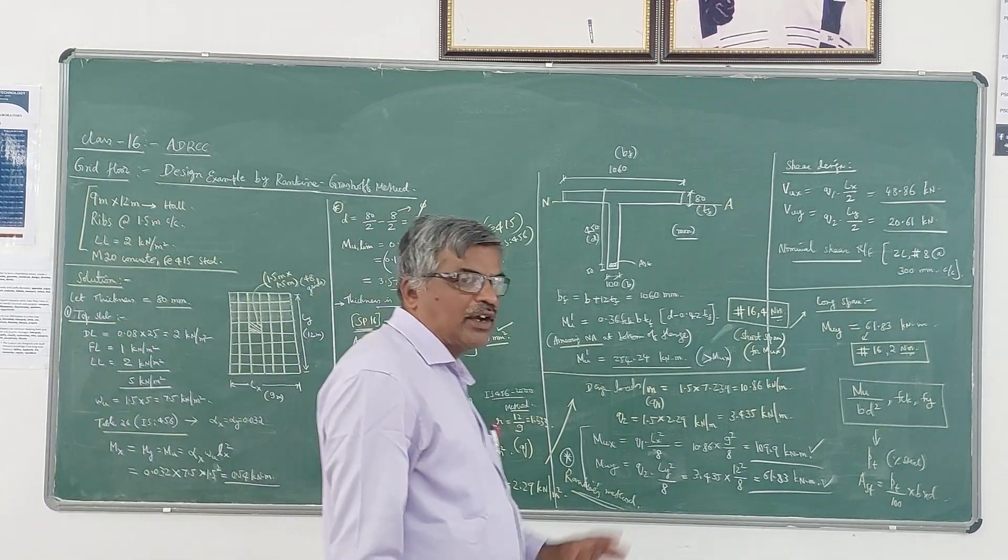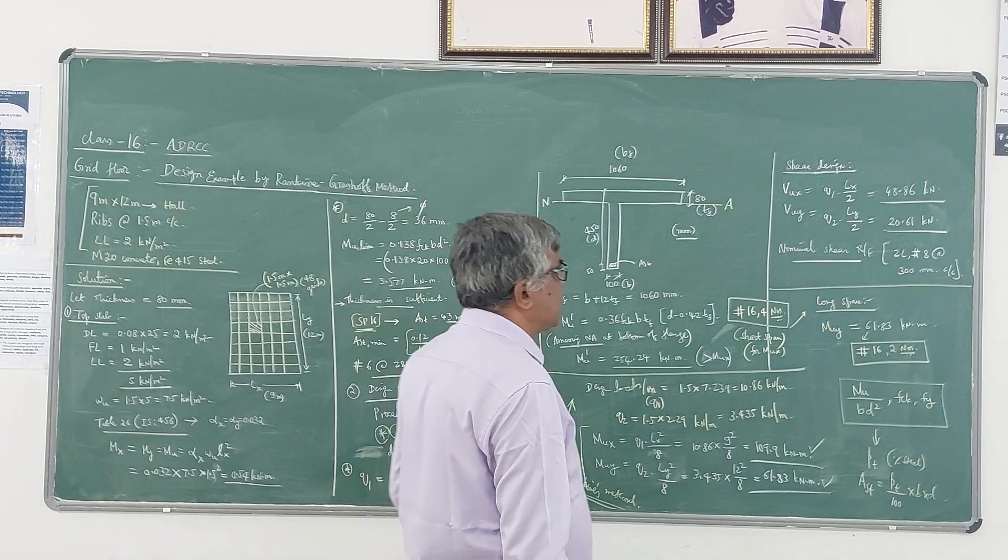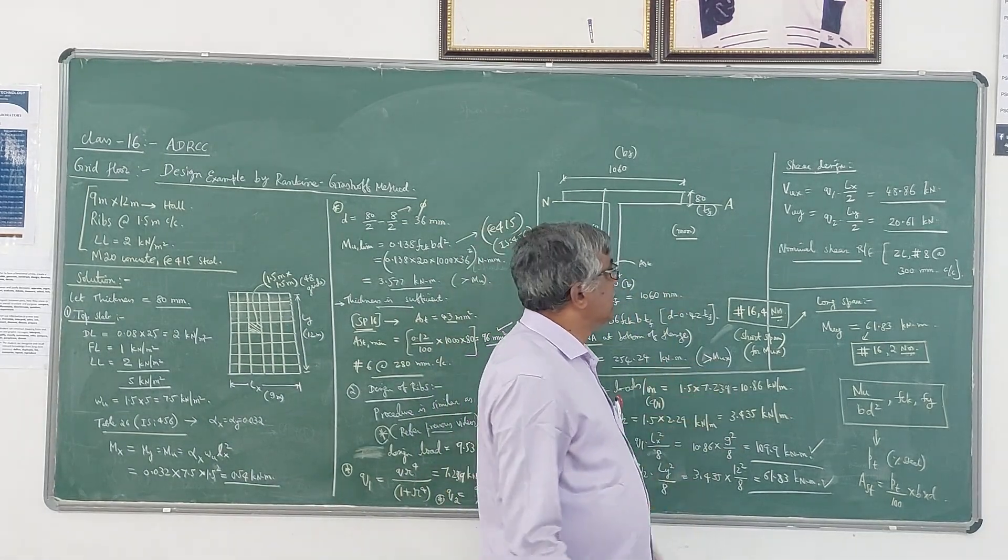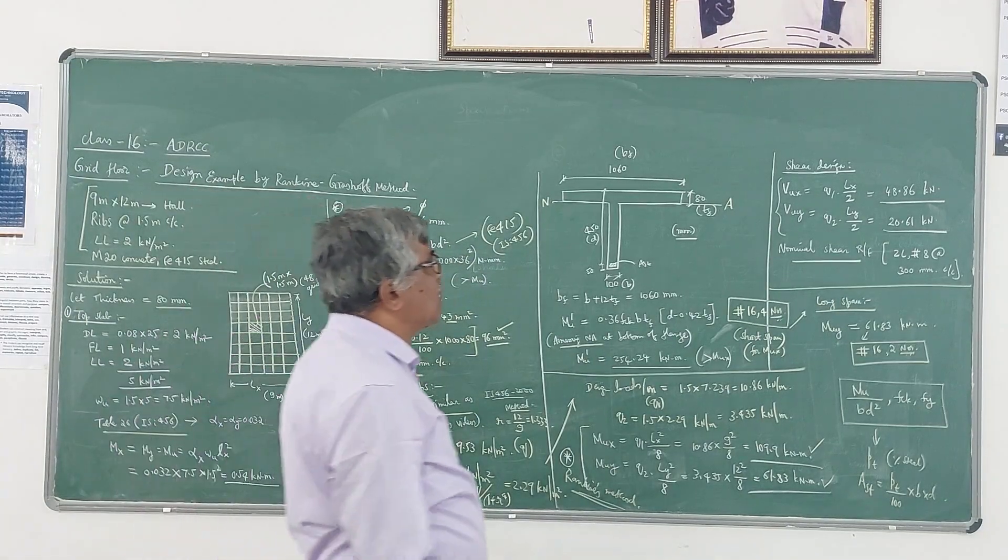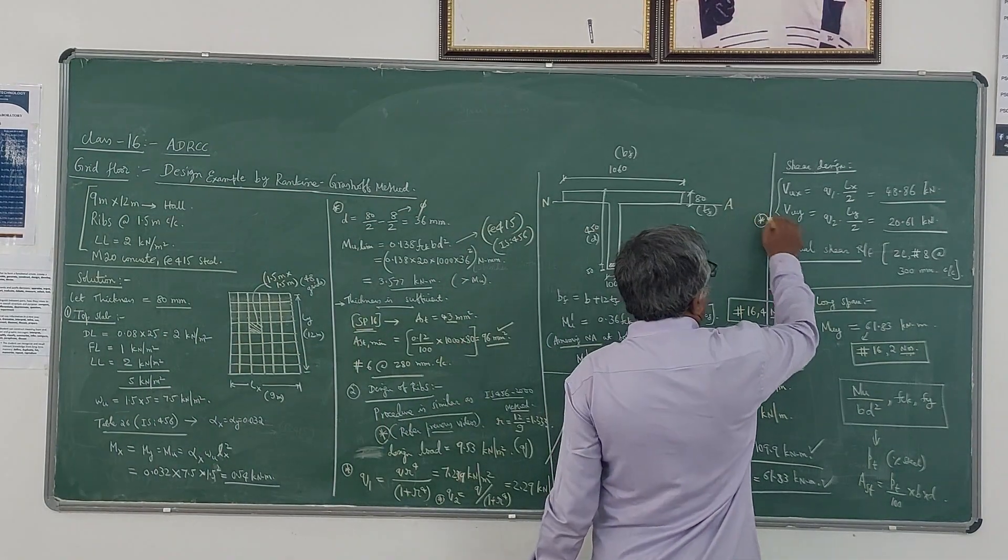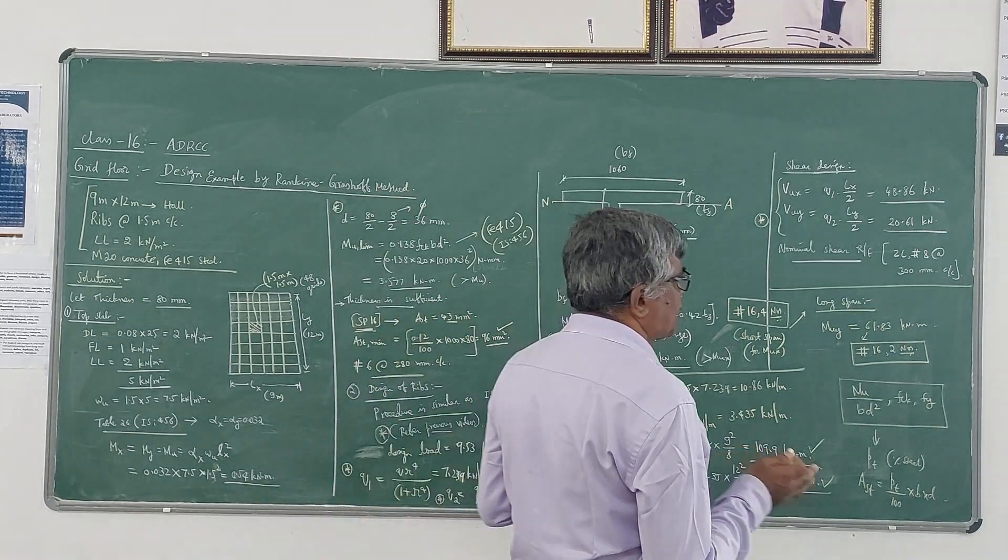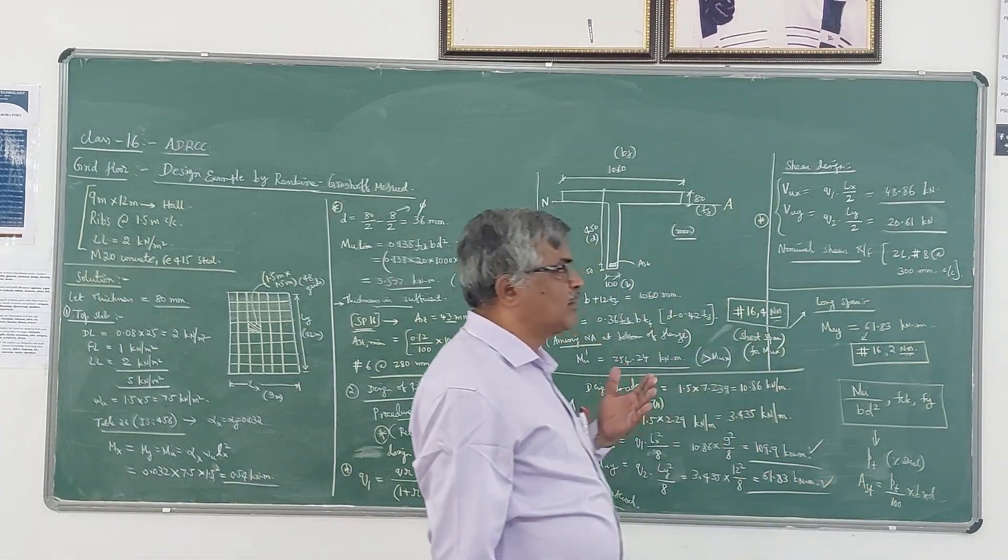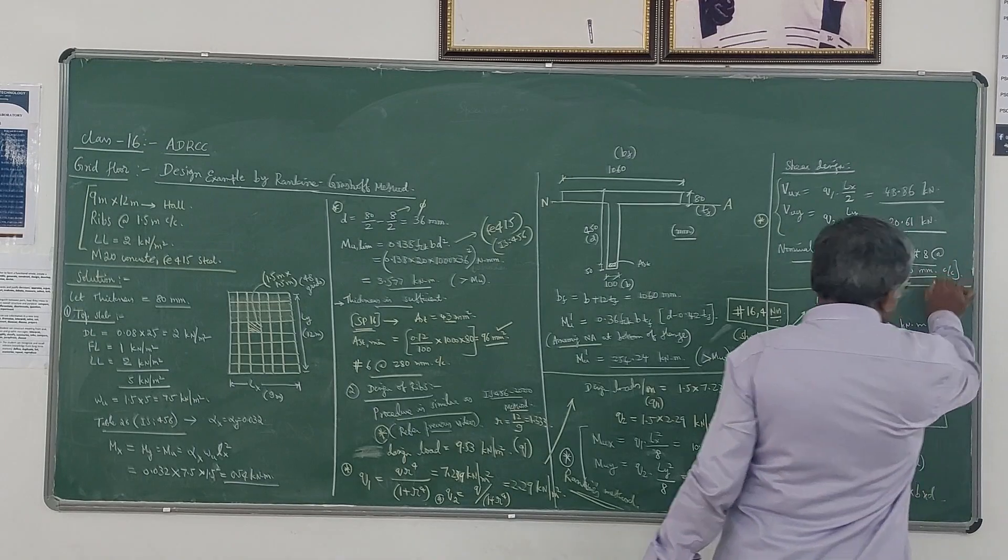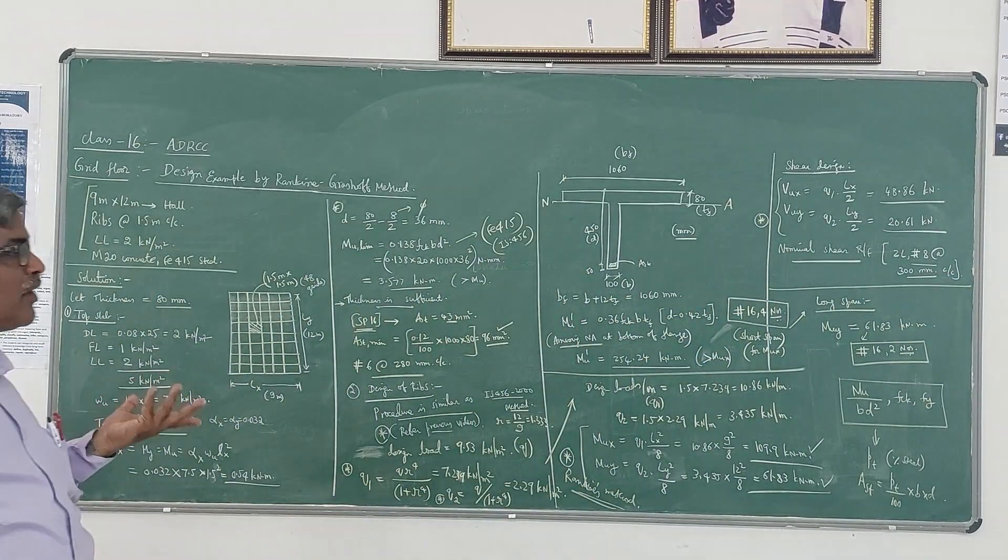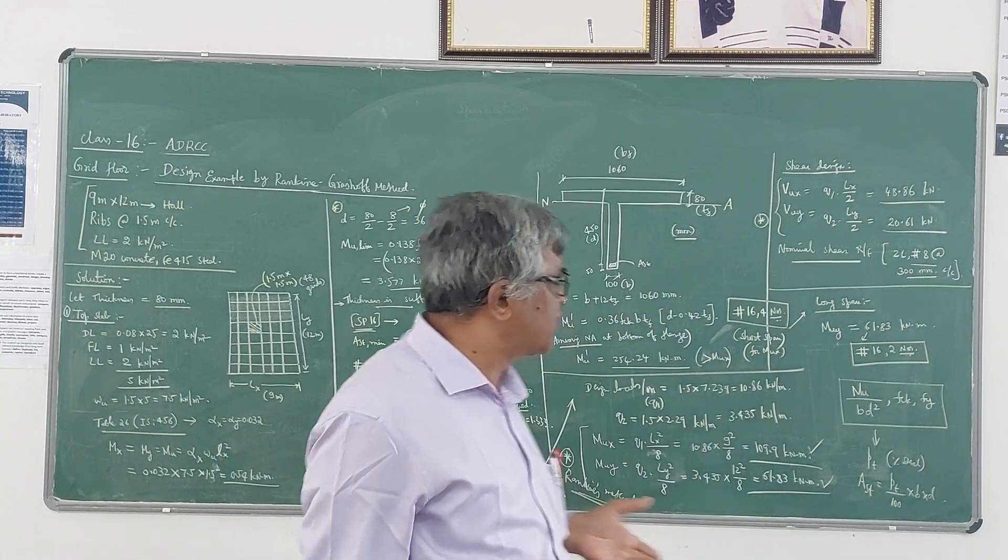Coming to the shear design: in the case of grid floors, shear contribution will not be there much. Shear reinforcement is only nominal. You can calculate VUX and VUY, the design shear force along shorter span and longer span, which is given by Q1 into Lx by 2 and Q2 into Ly by 2. Very nominal shear - if you compare tau_v with tau_c, only nominal shear reinforcement is required. Normally 2-legged 8 mm diameter stirrups at 300 mm center to center - this is the nominal shear reinforcement you can directly provide without design.